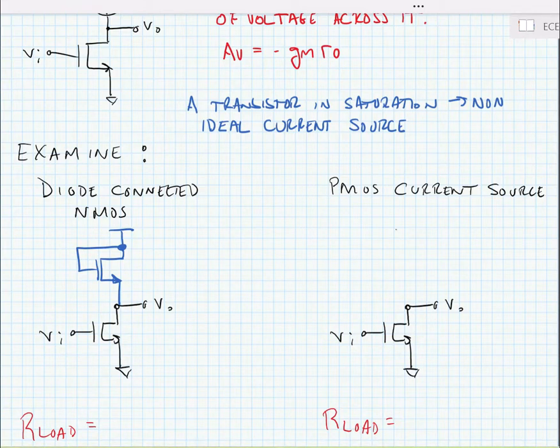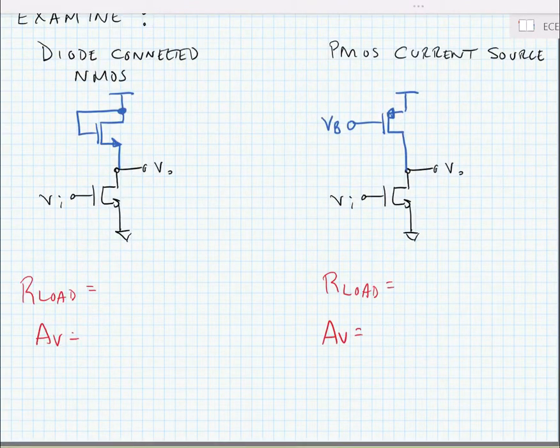Another way would be to use a PMOS as a current source. Here we would need some DC bias for the gate of this PMOS transistor. What we need to figure out is what are the loading implications of these two structures.